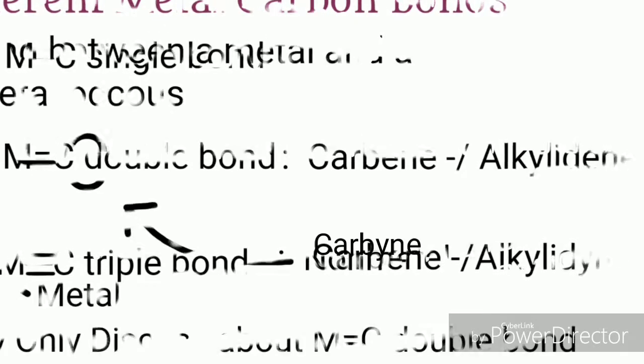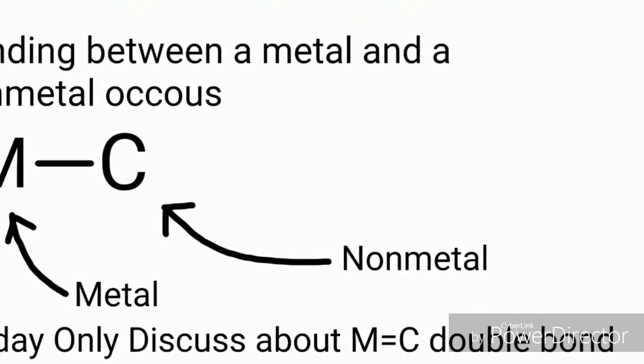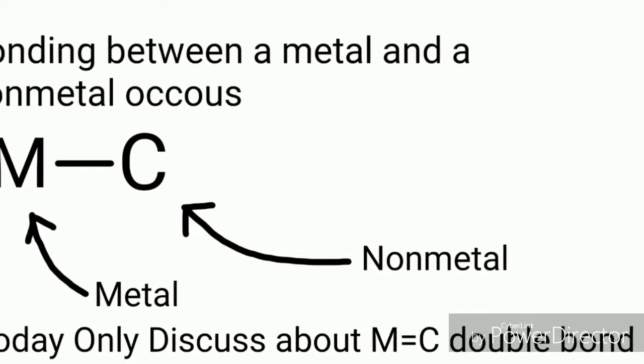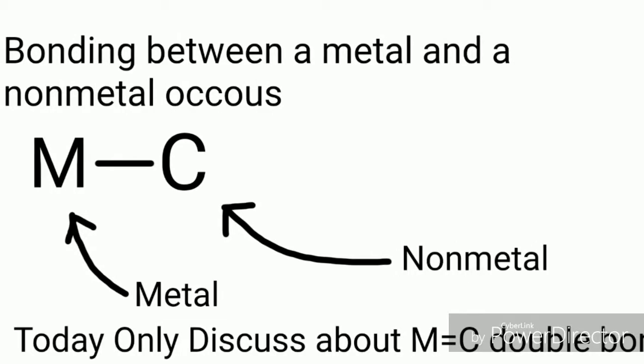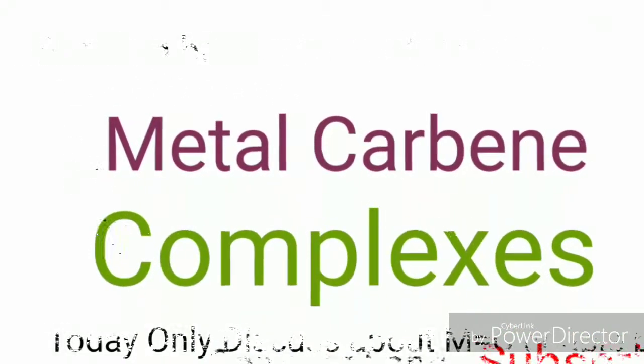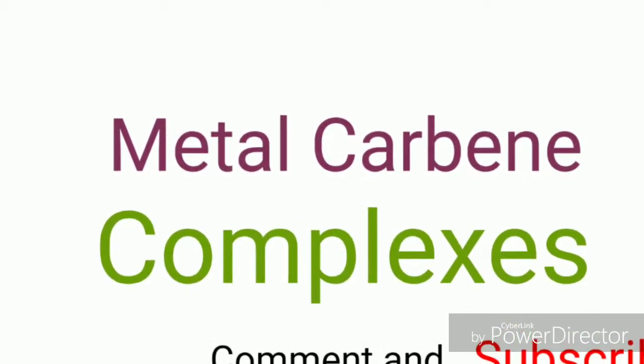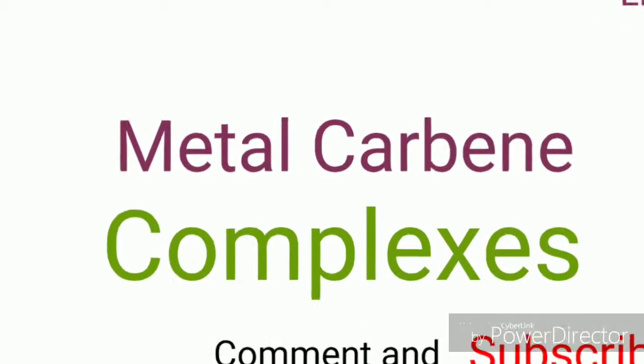Metal carbon double bond also called carbene and also alkylidene, and metal carbon triple bond also called carbyne or alkylidyne. In every case, bonding between a metal and a non-metal occurs. Here the non-metal is carbon atom.